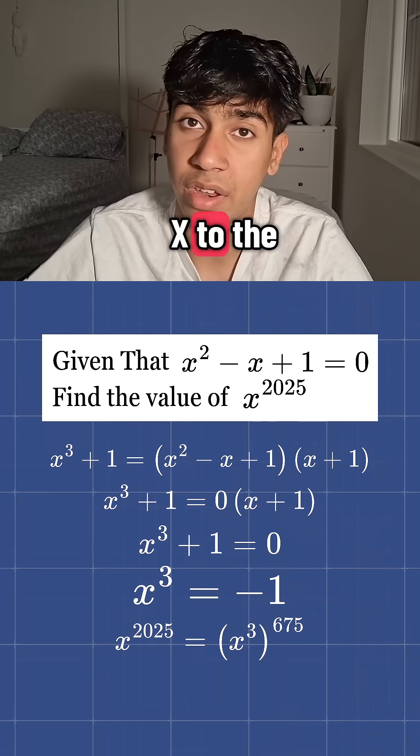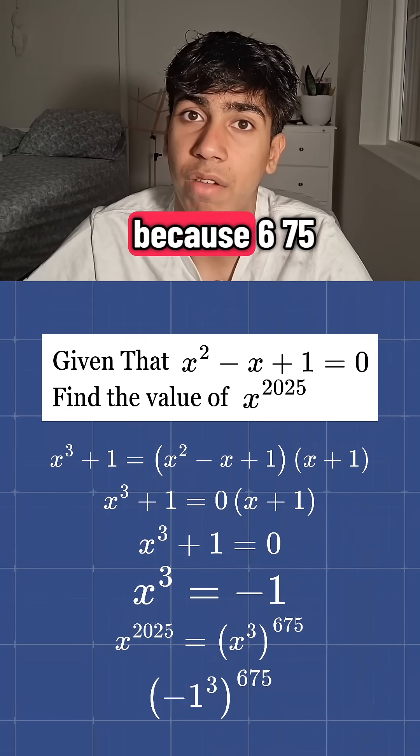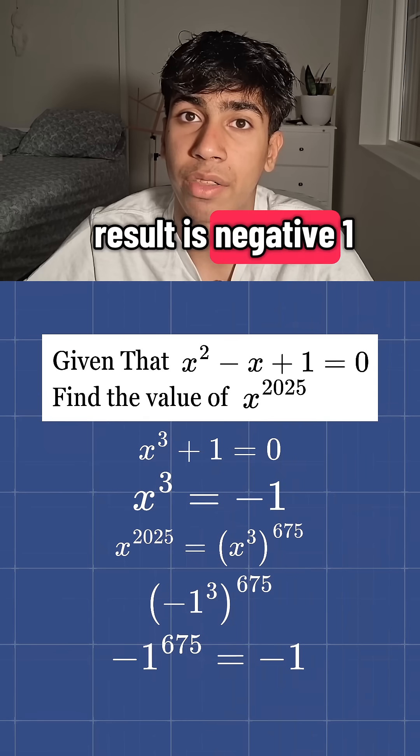Since x to the power of 3 is equal to negative 1, we have negative 1 raised to the power of 675. Because 675 is odd, the result is negative 1.